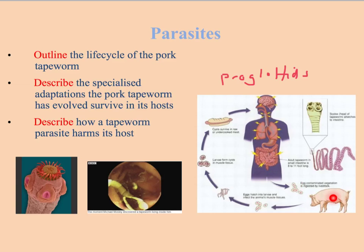Once the eggs are inside the pig, they emerge as larvae and burrow into the pig's tissues — into the meat — and form cysts, which are resistant survival structures. The problem comes if the pig is slaughtered for meat and the meat is not inspected thoroughly for parasites, and also if it's not cooked thoroughly — which could kill the cysts — then the undercooked meat is ingested by a human. The cysts then hatch into the beginning of another adult tapeworm.